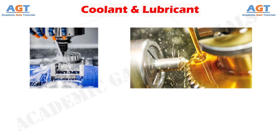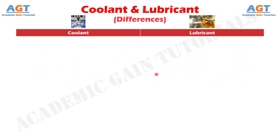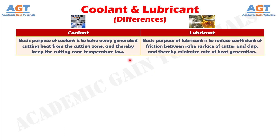So let's look into the basic differences between coolant and lubricant as cutting fluid in a tabular form. Difference number one: the basic purpose of coolant is to take away generated cutting heat from the cutting zone, and thereby keep the cutting zone temperature low. Whereas, the basic purpose of lubricant is to reduce the coefficient of friction between the rake surface of the cutter and chip, and thereby minimize the rate of heat generation.